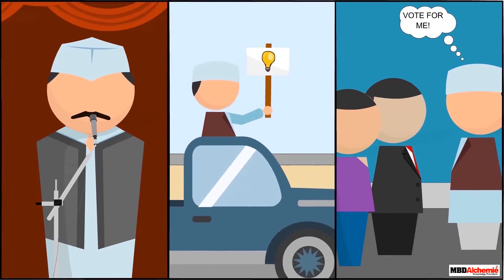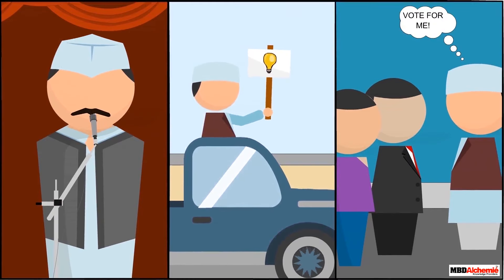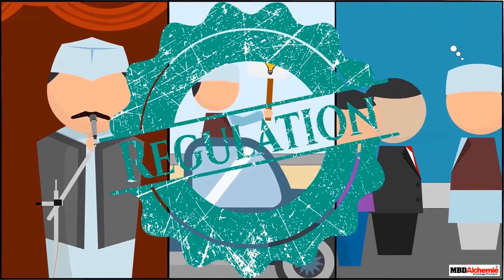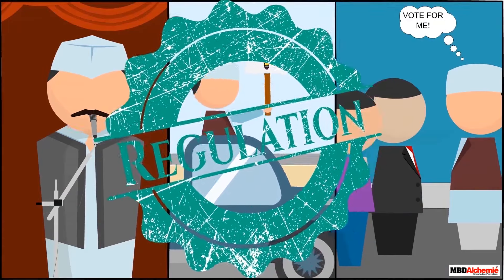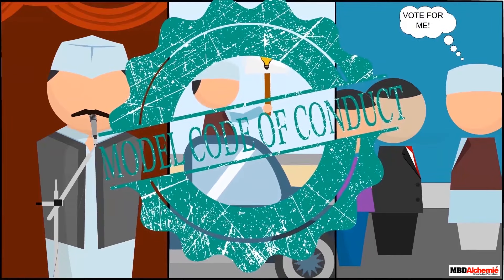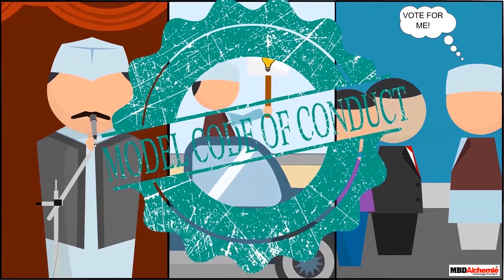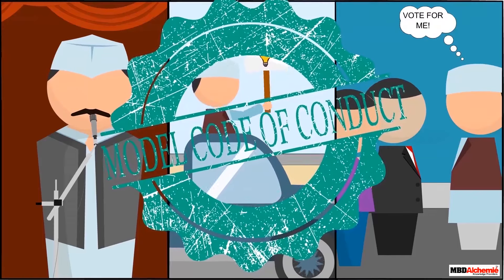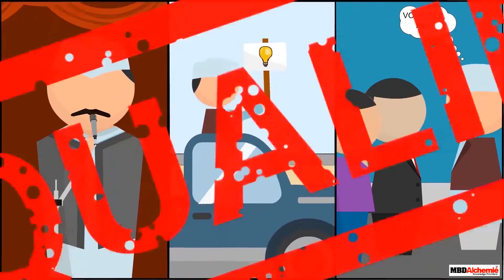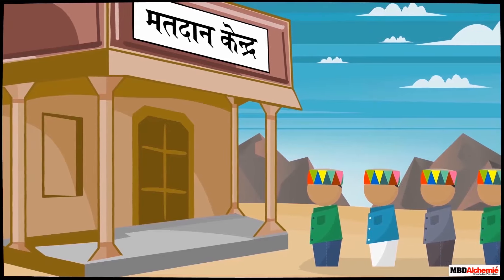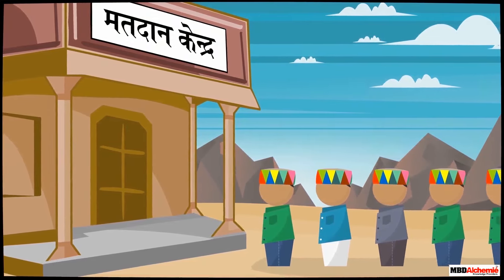In a democracy, every candidate is free to conduct their election campaign whichever way they want to. However, on certain occasions it may become necessary to regulate campaigns in order to ensure that the process is fair and equitable. For this, there is a model code of conduct in place, which regulates the actions of the candidates and their campaigning activities. Any candidate breaching the code of conduct may be disqualified from the elections and not allowed to contest further.